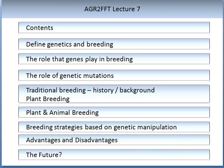In today's lecture, we will be learning some of the basics surrounding genomics and genetics. We will define genetics and breeding and the role that genes play in breeding. We will define the role of genetic mutations. We will look at traditional breeding from a historical and background perspective, touch on plant and animal breeding basics, look at breeding strategies based on genetic manipulation, advantages and disadvantages, and a quick talk about the future of genetics.